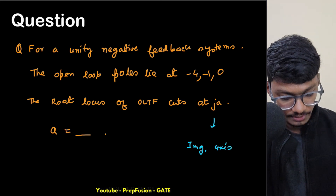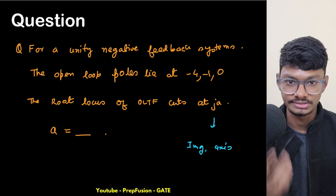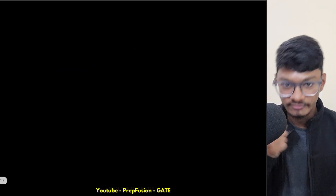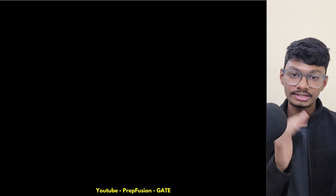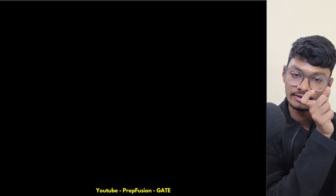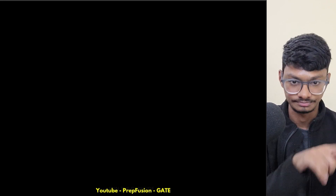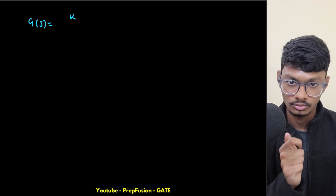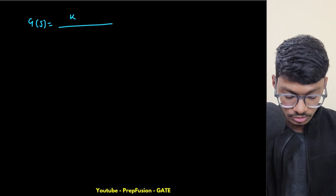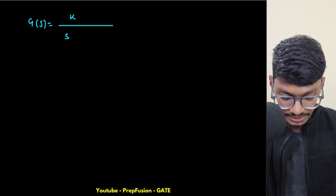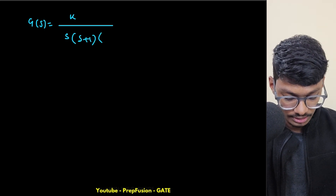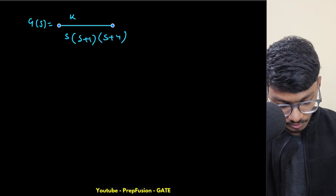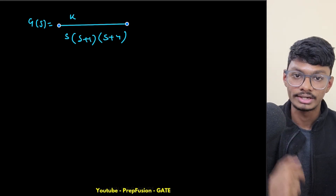So, whenever the root locus cuts the imaginary axis, we simply put s = jω in the characteristic equation and find the value of ω. Let me write the OLTF — obviously there is some gain parameter k, and the open loop poles lie at s = 0, s = -1, and s = -4. So we have three open loop poles.